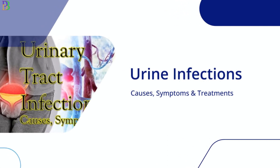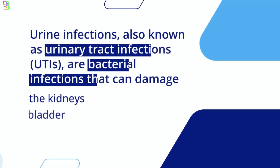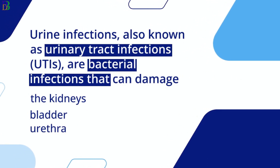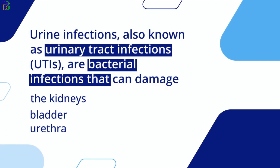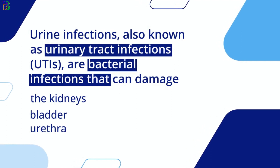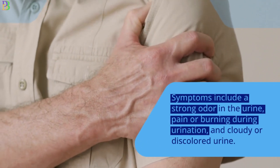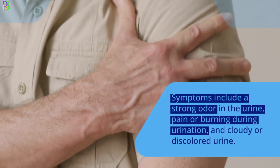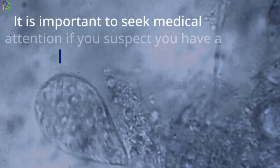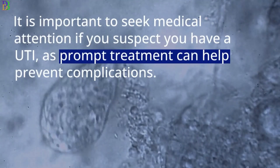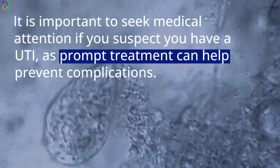Urine infections, also known as urinary tract infections or UTIs, are bacterial infections that can damage the kidneys, bladder, and urethra. Symptoms include a strong odor in the urine, pain or burning during urination, and cloudy or discolored urine. It is important to seek medical attention if you suspect you have a UTI, as prompt treatment can help prevent complications.